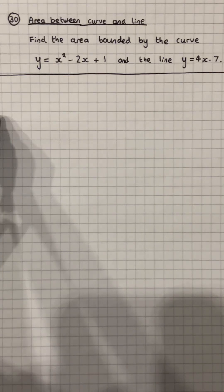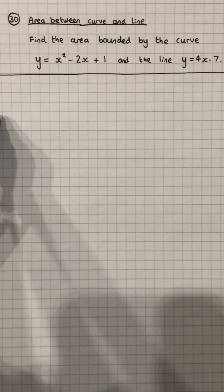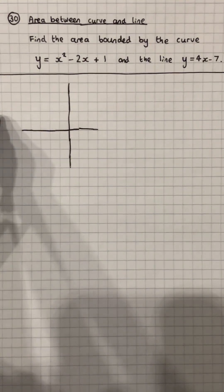Let's find the area bounded by the curve x squared minus 2x plus 1 and the line y equals 4x minus 7 in under 3 minutes.